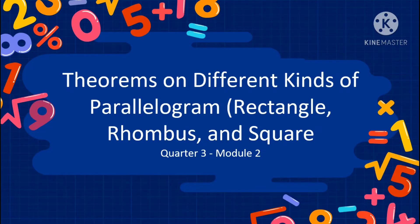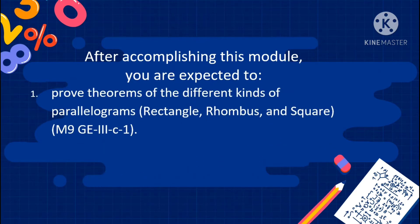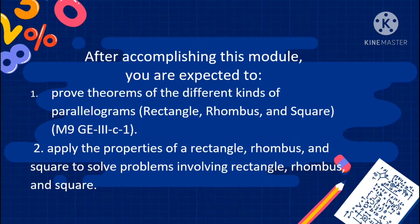Dear students, today we will discuss theorems on different kinds of parallelograms: rectangle, rhombus, and square. After accomplishing this module, you are expected to prove theorems of the different kinds of parallelograms, and apply the properties of a rectangle, rhombus, and square to solve problems involving rectangle, rhombus, and square.